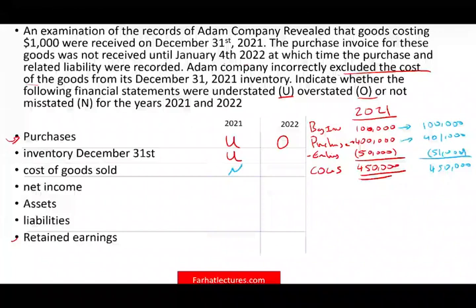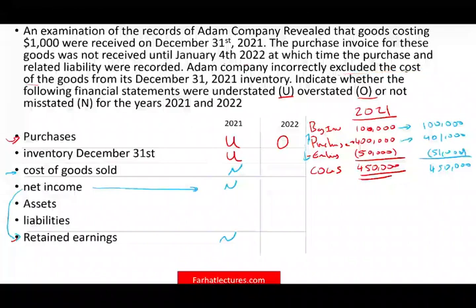Purchases and ending inventory offset each other, so the net effect is zero on cost of goods sold. Therefore, cost of goods sold is not affected — whether you included certain purchases or not — because when you include them, you include them in ending inventory; when you don't, you don't include them in ending inventory. Here they were excluded from inventory. They were excluded.